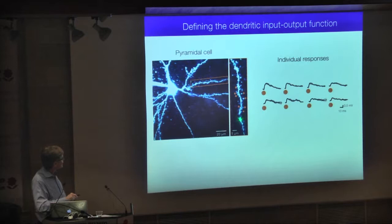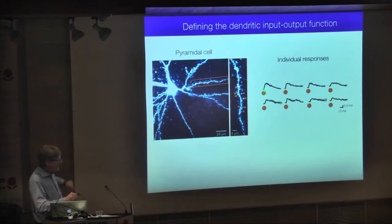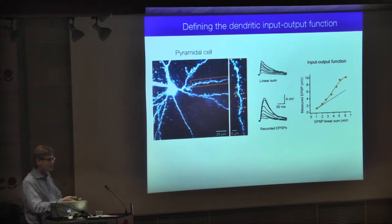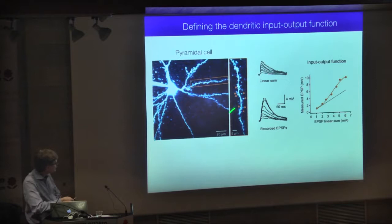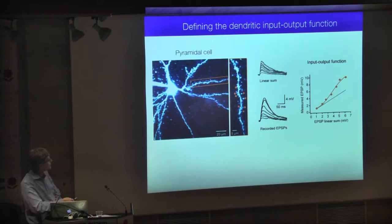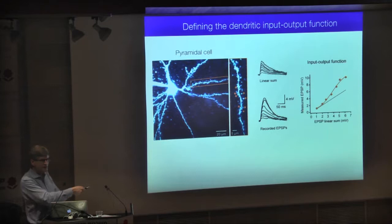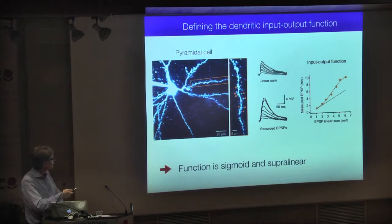We can now define the input-output function of single dendrites. We patch a layer 2-3 pyramidal cell, identify individual spines, and activate them with two-photon glutamate uncaging, recording the response at the soma to uncaging at individual spine heads. Activating them all together defines the input-output function of this set of spines. Ramping up the number of synapses, comparing the measured EPSP to the algebraic linear sum of individual responses, we plot the input-output function.